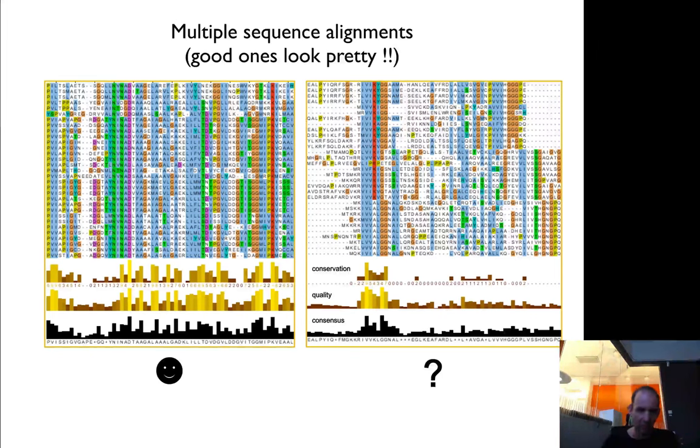You have conservation, quality, and consensus. There are some information that you can measure from it. So that would be an alignment, most likely it's quite okay.